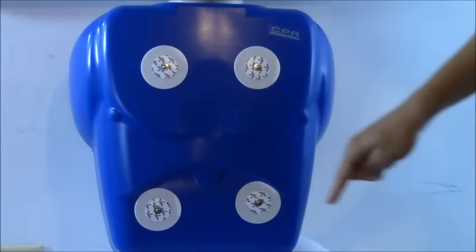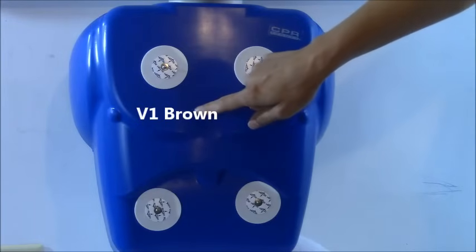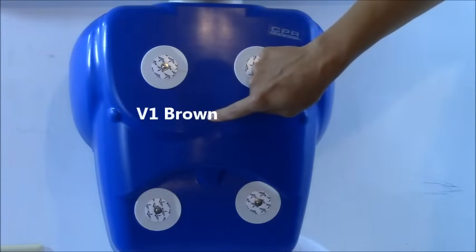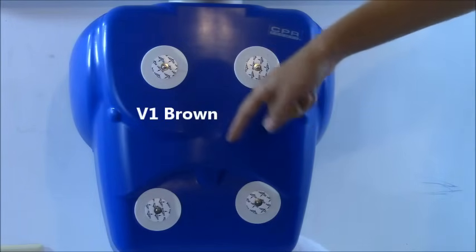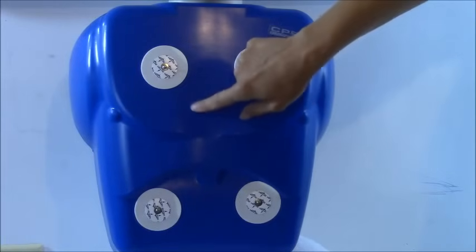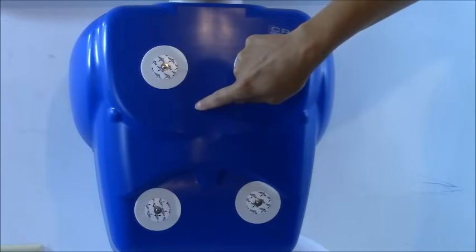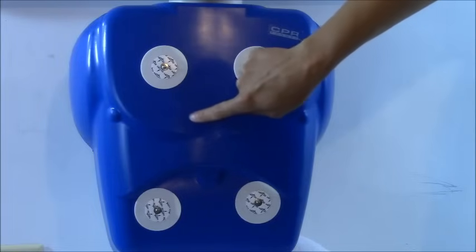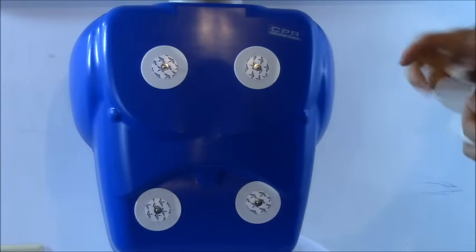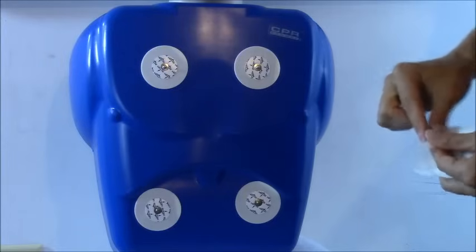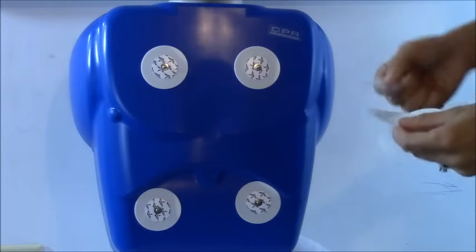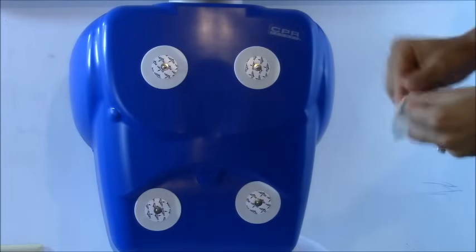And we have one more left. And this will be V1. V1 is the brown lead, and everyone just tries to remember this as chocolate in the middle. So the brown lead will be at the fourth intercostal space, which will be right in this area. Clean your area, prep it, and then put your electrode on.